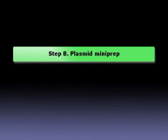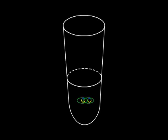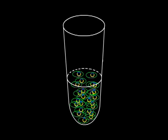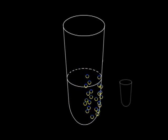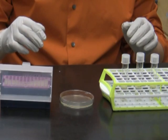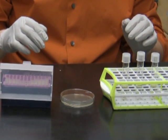Step 8: plasmid mini prep. During the plasmid mini prep we are going to grow cultures of E.coli cells, lyse them, and isolate plasmid DNA. The only task for day 2 is to start mini prep cultures.